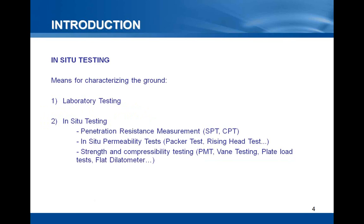Over the years, many testing methods have been developed. These tests can be done on samples, which are the laboratory tests, or on sites, which are called the in-situ tests. In-situ testing methods can be divided in three types: those which consist in measuring the resistance to penetration, like the SPT or CPT tests; those which consist in measuring permeability of the ground, like the Packer tests; and finally, those which consist in measuring strength and compressibility response of the ground when loaded. Examples of this type include plate load testing, vane shear test, and flat dilatometer. The pressure meter is included in this last category.